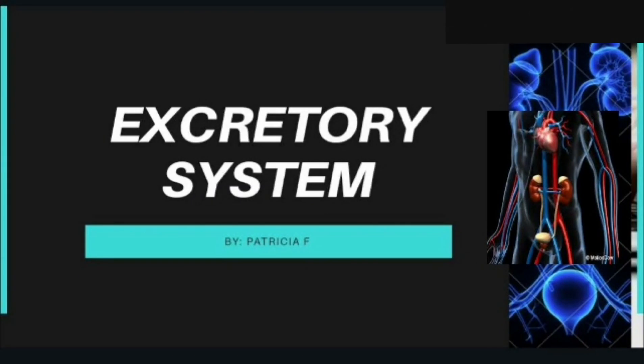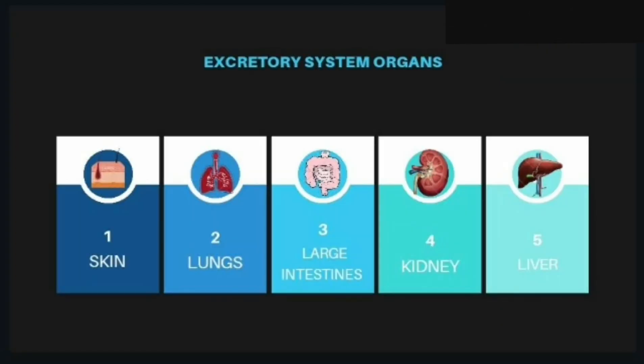The topic of our talk today is about the excretory system. The excretory system includes five organs: skin, lungs, liver, kidney, and large intestine.